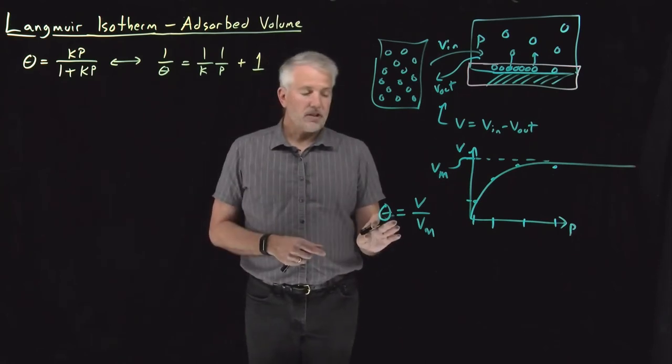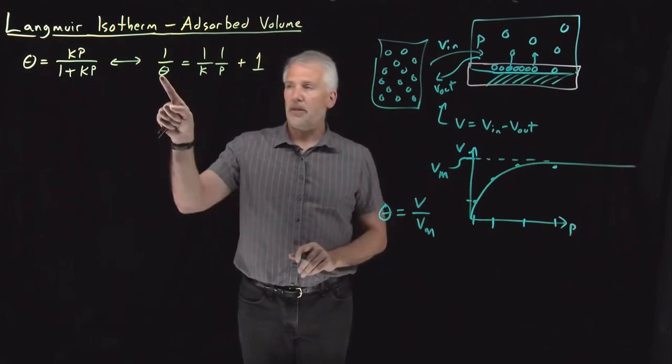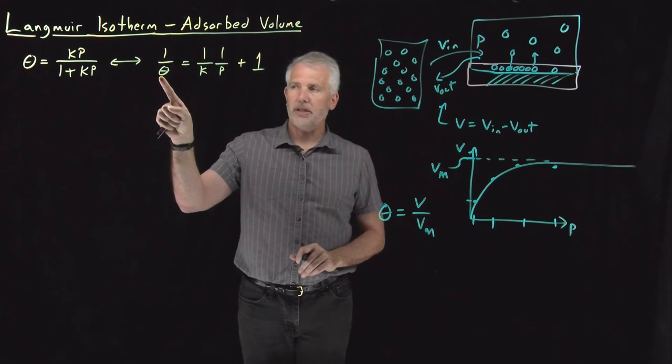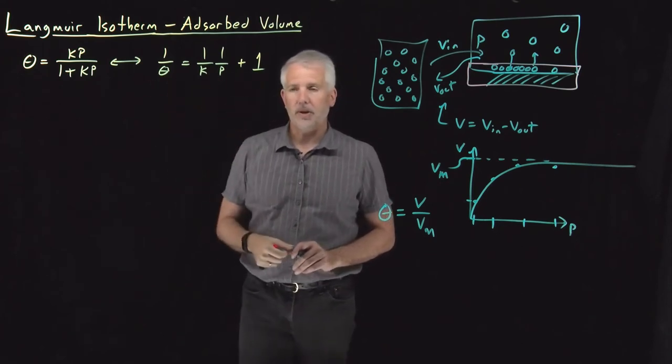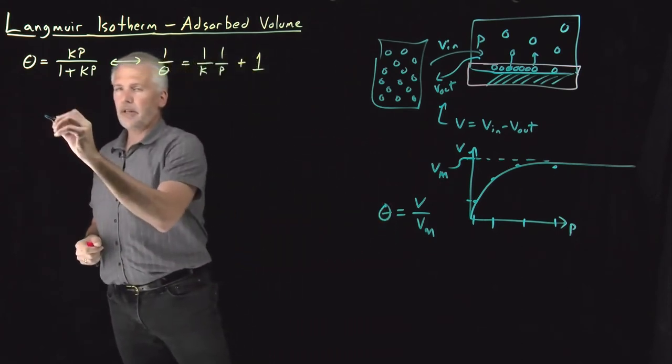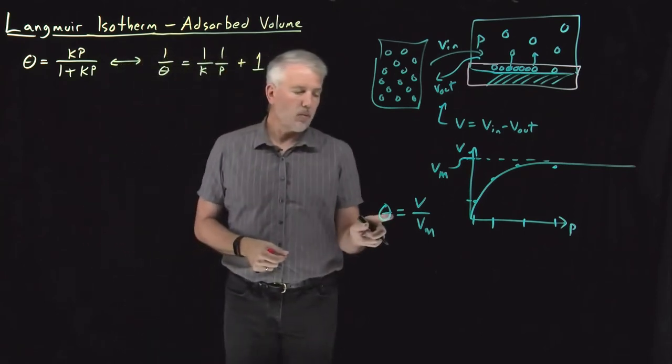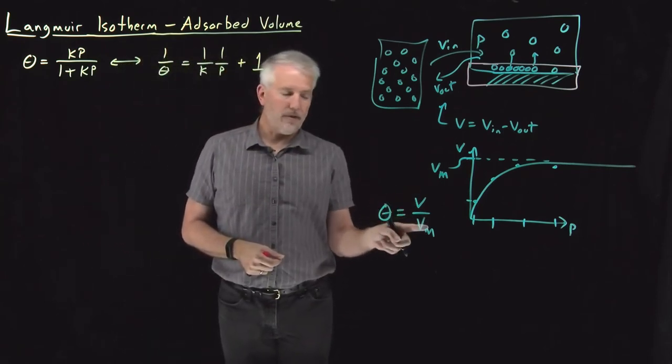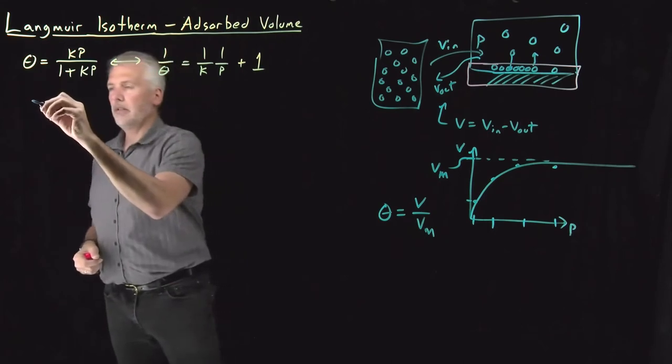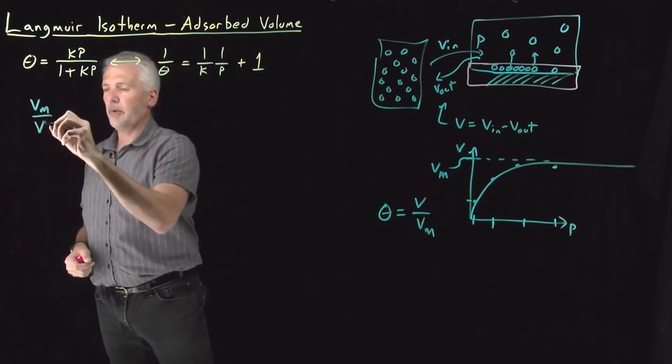If we ask ourselves, what does that say about this equation, if I go back to this equation and rewrite my linear form of the Langmuir isotherm equation, instead of writing one over theta, I'll write one over this quantity. One over V over Vm is the upside down of that, Vm over V. So that's the left side.